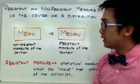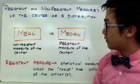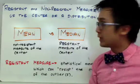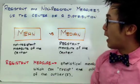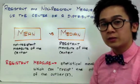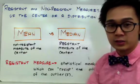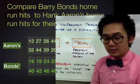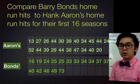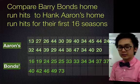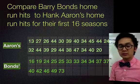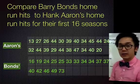To further illustrate the meaning of resistant measures of center, we're going to use an example data set to see how we can tell if one is a resistant or non-resistant measure. We're going to compare Barry Bonds' homerun hits to Hank Aaron's homerun hits for their first 16 seasons, and here are their scores for those 16 seasons in the MLB.